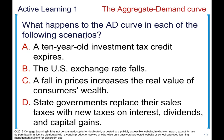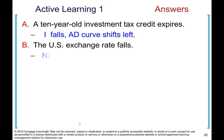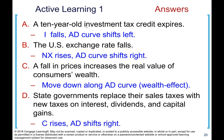Active learning: what happens to the aggregate demand curve in each scenario? Scenario A: a ten-year-old investment tax credit expires — investment will fall, and aggregate demand shifts to the left, as there is no longer the incentive to invest. Scenario B: the U.S. exchange rate falls — the dollar is cheaper, exports rise, net exports go up, and aggregate demand shifts to the right.